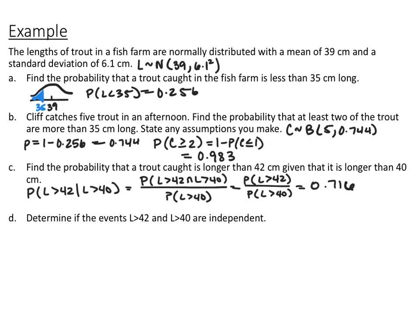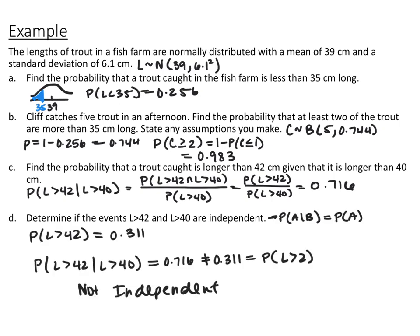For part D, determine whether being more than 42 centimeters and being more than 40 centimeters are independent events. Events are independent if P(A | B) = P(A). The probability of just L > 42 is 0.311, but the conditional probability P(L > 42 | L > 40) is 0.716. Since 0.716 ≠ 0.311, knowing the trout was longer than 40 cm affected the probability. Therefore they are not independent of each other.